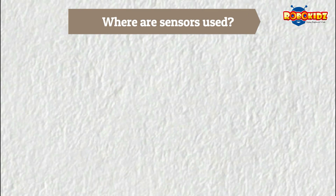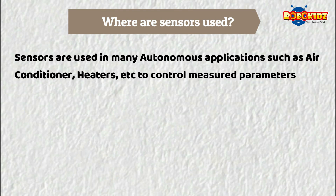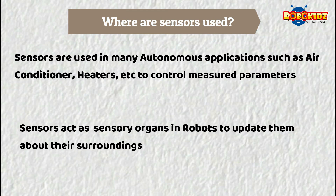The second thing we need to know is where these sensors are used. Sensors are generally used in many applications such as air conditioners, heaters, automobiles, etc., where they need to be controlled or manipulated. But in robots, sensors act as sensory organs. Sensors provide essential input about the surroundings of the robot, helping it to work accordingly.